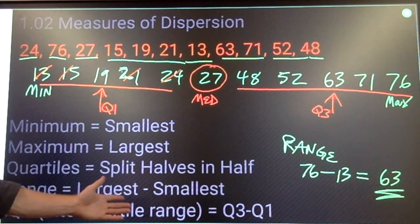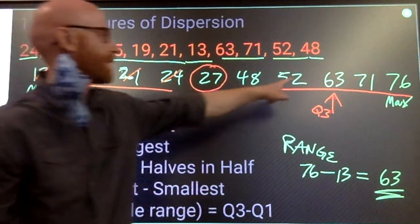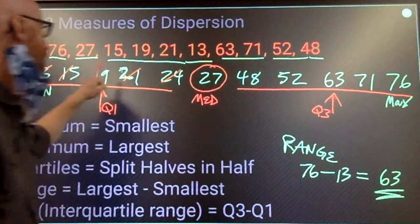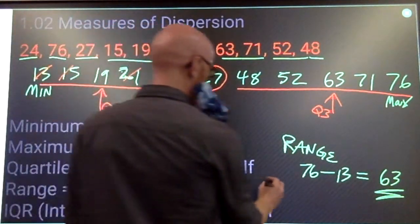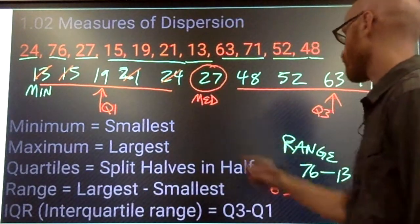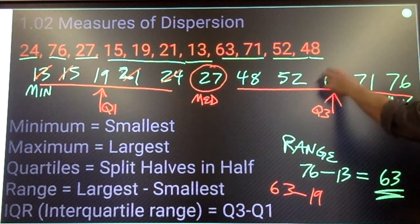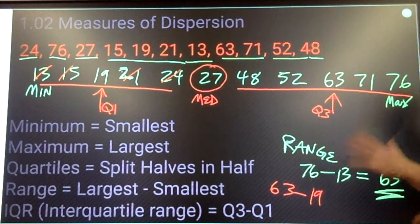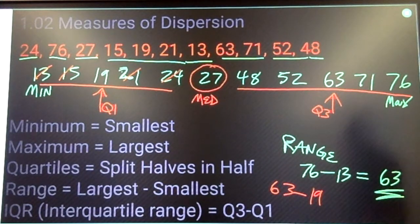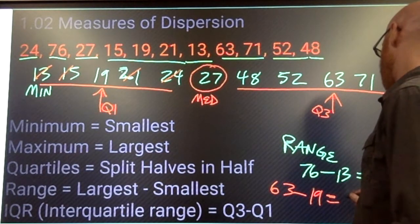And then, similar to a range, an interquartile range will be, take this number, subtract that one. All right, 63 minus 19. Now, this is a coincidence right here that the third quartile and the range are the same. That doesn't usually happen.